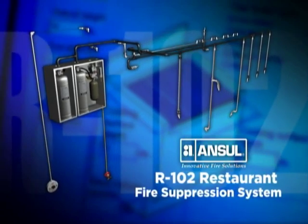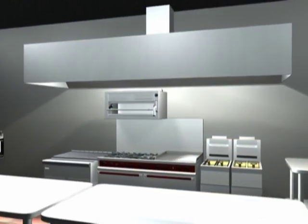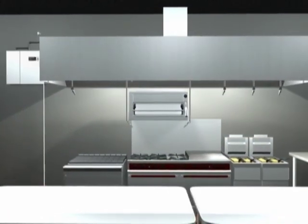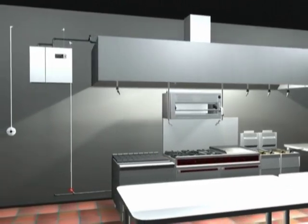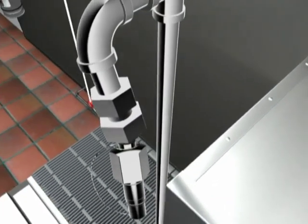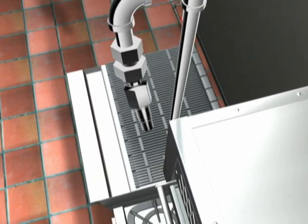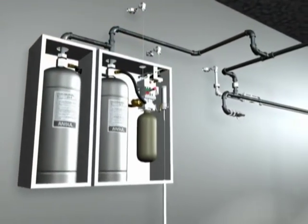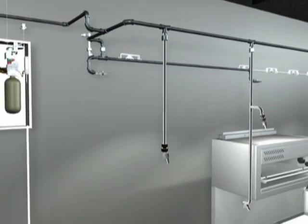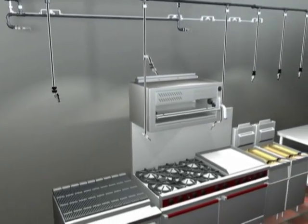The Ansul R-102 Restaurant Fire Suppression System provides you with two design options. The primary is an appliance-specific design where nozzles are aimed at specific hazard areas of the appliance. This is considered the most economical design because the agent is aimed only where it is needed.